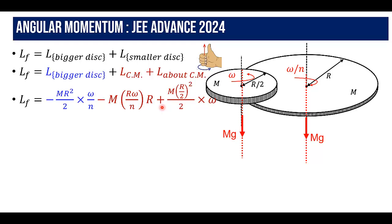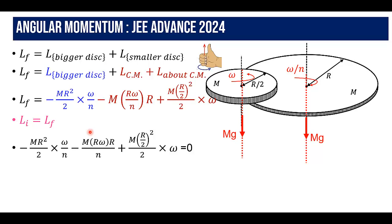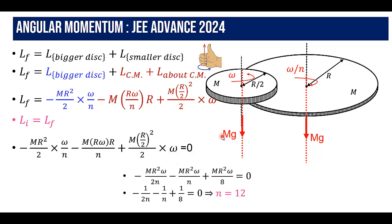Now equating initial and final angular momentum, which both equal 0: −mr²ω/(2n) − mr²ω/n + mr²ω/8 = 0. Cancelling mr²ω throughout: −1/(2n) − 1/n + 1/8 = 0. Solving this gives n = 12.